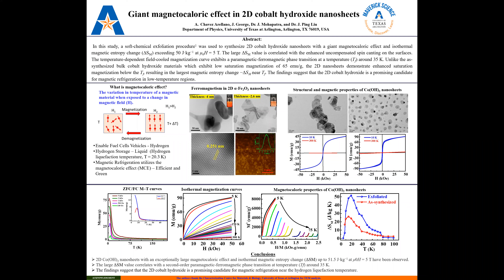Hi, my name is Zabro Chavez-Ariana, and the focus of the study is the giant magnetocaloric effect in 2D cobalt hydroxide nanosheets. In this study, a soft chemical exfoliation procedure was used to synthesize 2D cobalt hydroxide nanosheets with a giant magnetocaloric effect in isothermal magnetic entropy change.